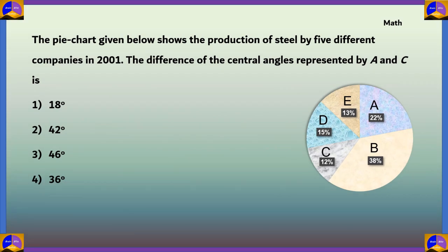The next question on mathematics: the pie chart shows the production of steel by five different companies A, B, C, D, E in 2001. The difference of the central angles represented by A and C is: option 1 — 18°, option 2 — 42°, option 3 — 46°, option 4 — 36°. We are given the percentage of steel production for each company and need to find the central angles of company A and company C, then their difference.